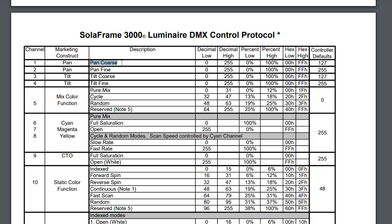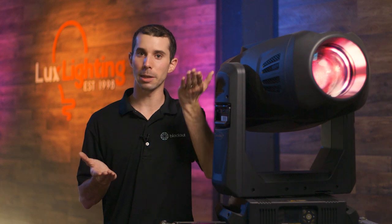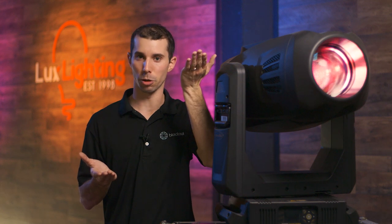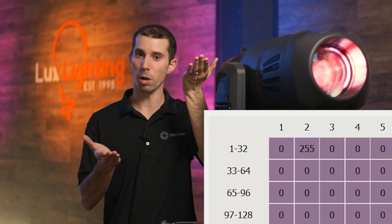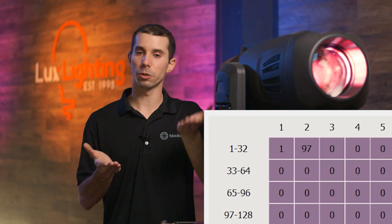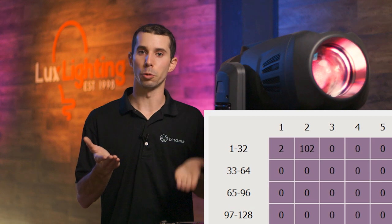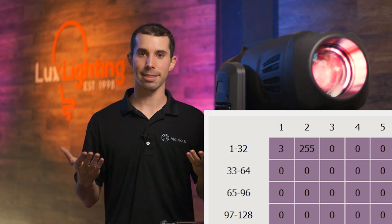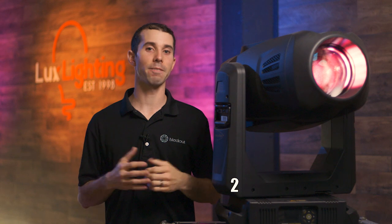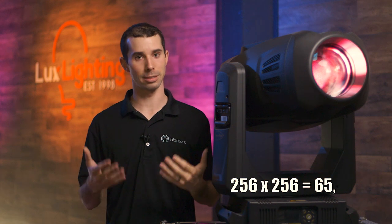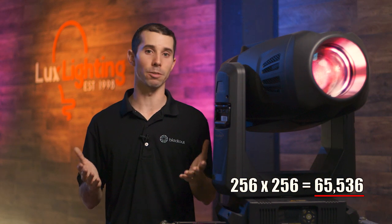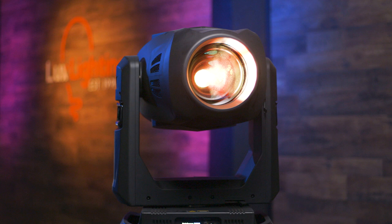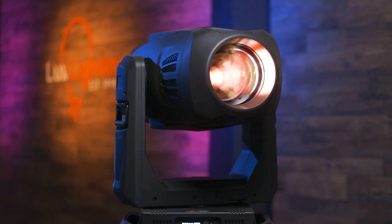16-bit consists of two channels: a coarse channel and a fine channel. For every 256 steps the fine channel goes, the coarse channel advances 1 — another 256 steps, 2 — 256 steps, 3. When you do the math, that's 65,536 steps in any given parameter. Now you can really fine-tune your moving light's position.